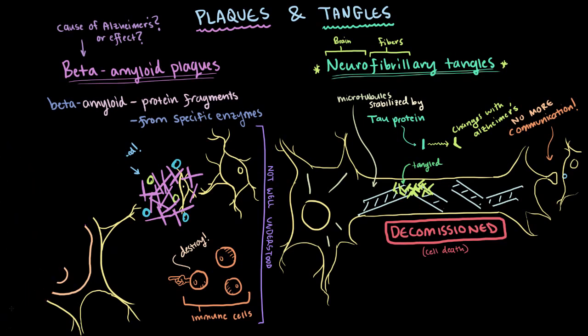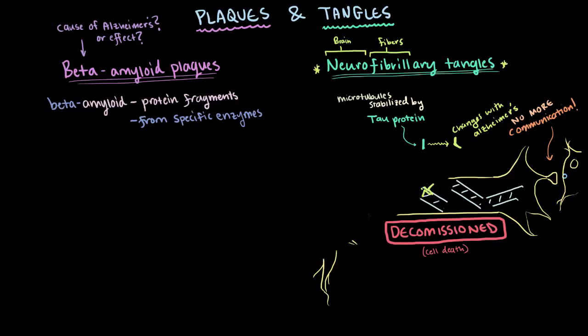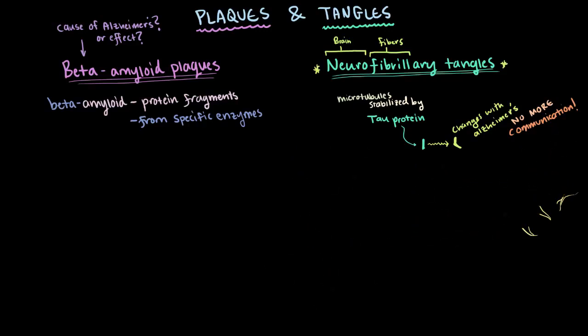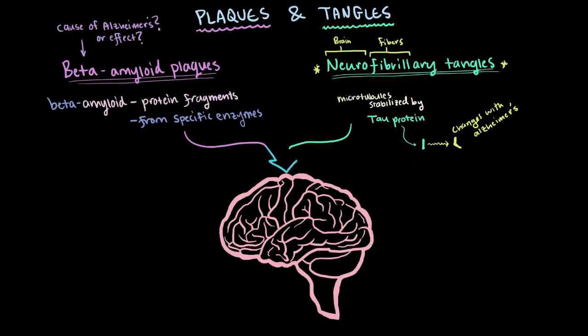Now these plaques and tangles can be found in brains of many older people. But they're found to a much greater extent in the brains of those with Alzheimer's disease. And for Alzheimer's, they tend to start forming and spread from the cortex in a pretty predictable way as Alzheimer's progresses.